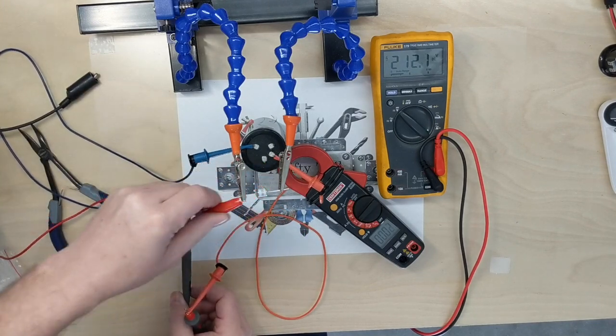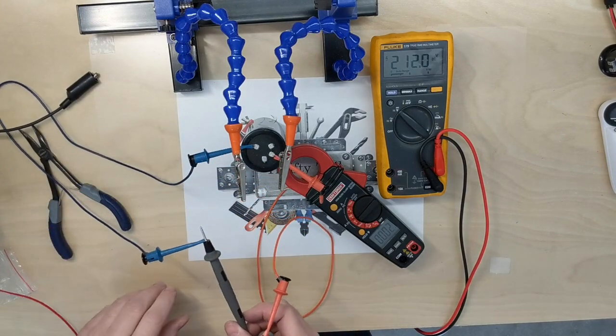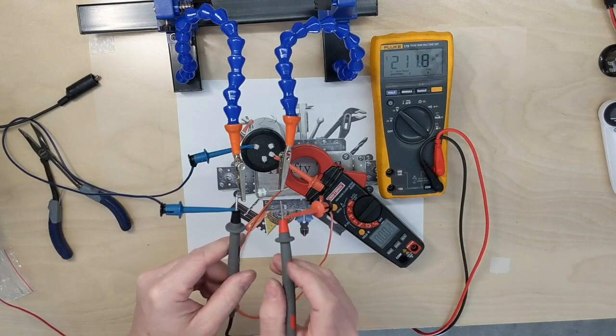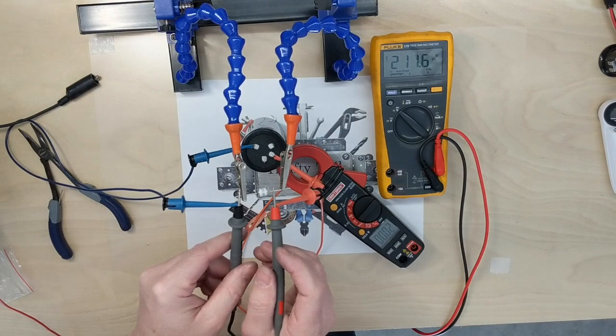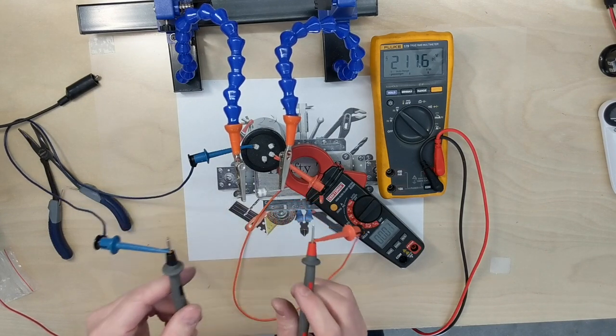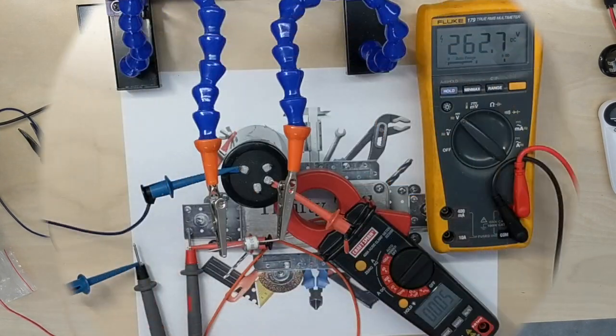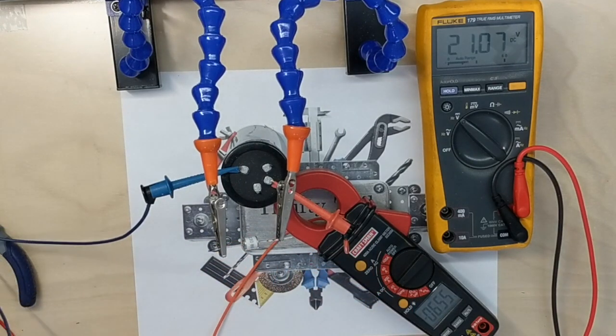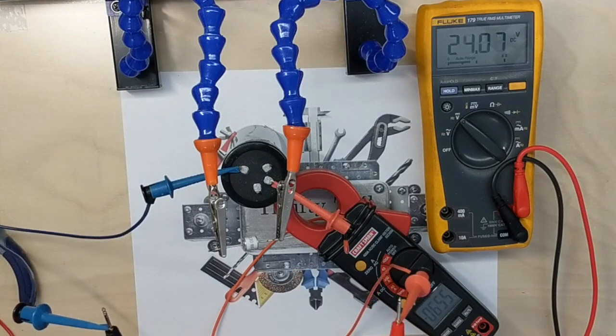The voltage is charging the capacitor at 212 volts. Still nothing at 212 volts. Now we actually have 260 volts and we see that it actually quickly dissipated.